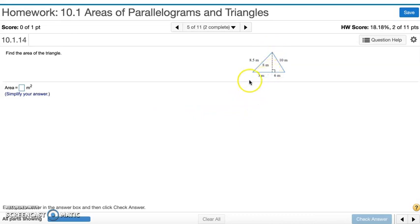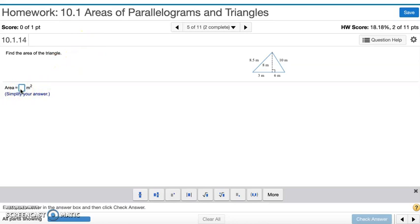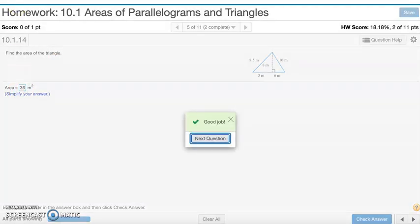So we have our height. The base is going to be the sum of 3 and 6, which is 9. So 8 times 9 is 72, divided by 2 is 36. So the area of this triangle is 36. And that's number 5.